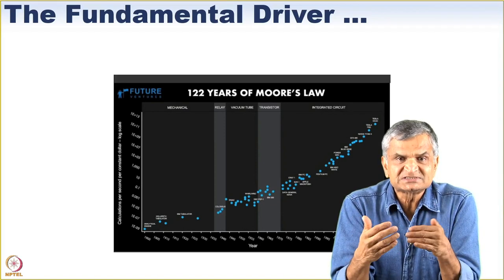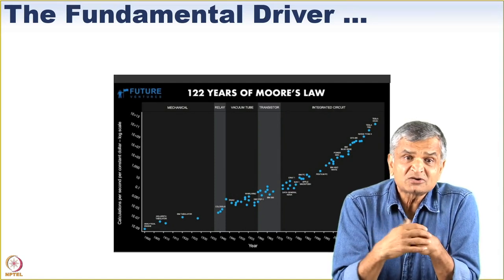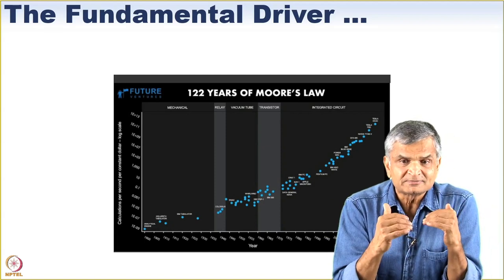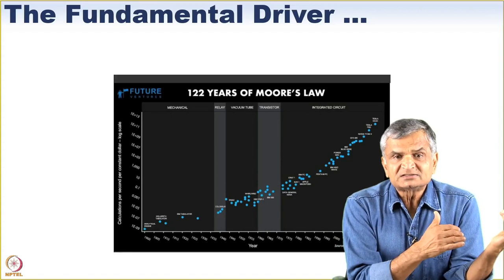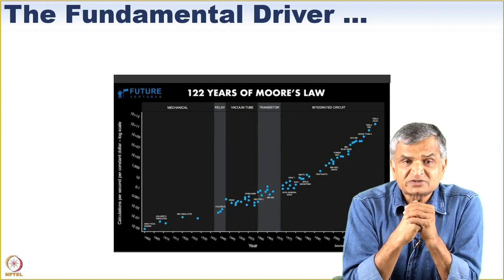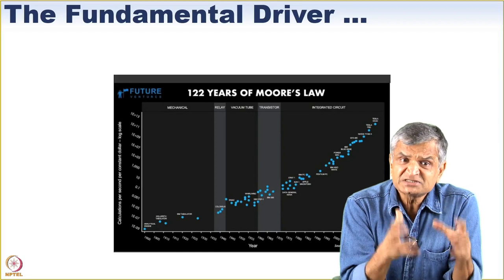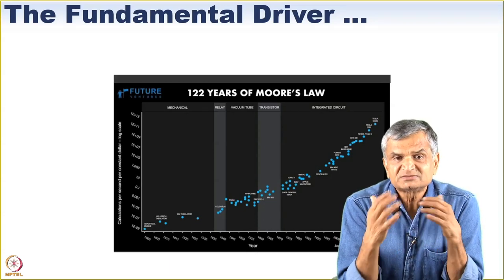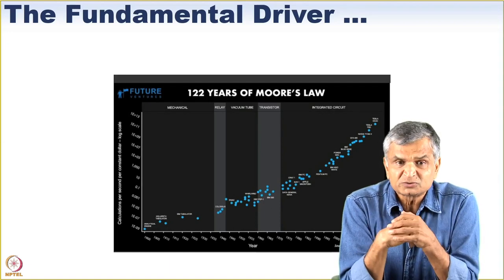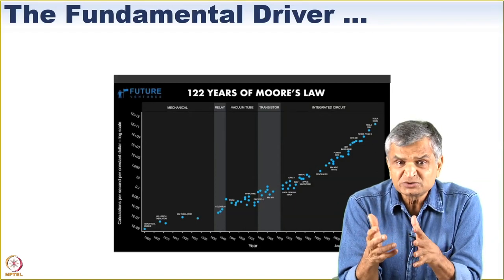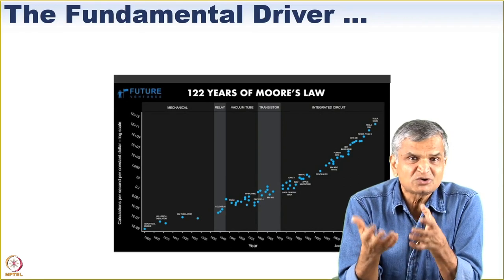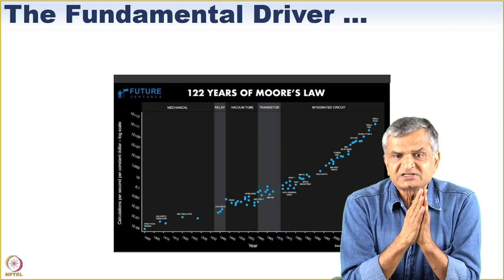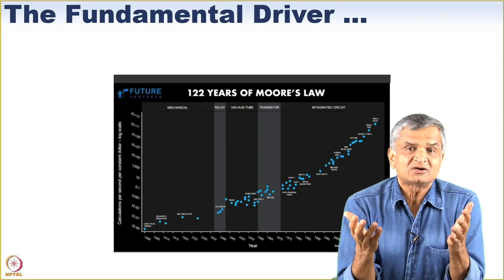When something doubles and keeps doubling every two years, you have something called an exponential curve. He also noticed that if you backtrack to the 70 years prior to the start of the 20th century, even though the foundation technology for computing was different, every two years the computing power would double in terms of computing power per dollar. It moved from mechanical to relays to vacuum tubes and then transistors, which was the dawn of the semiconductor integrated technology era.